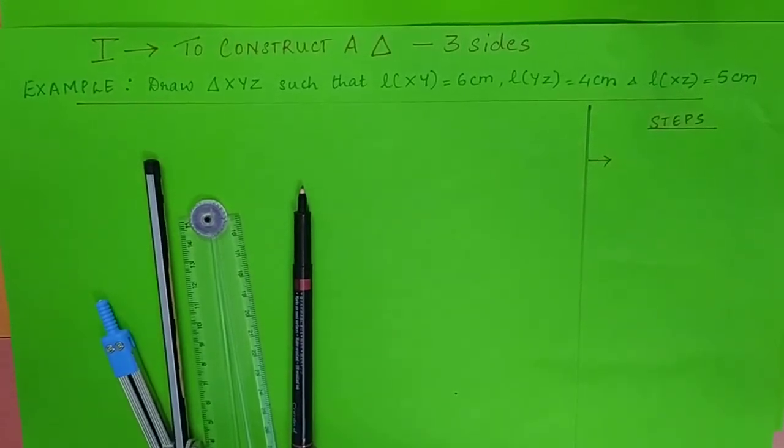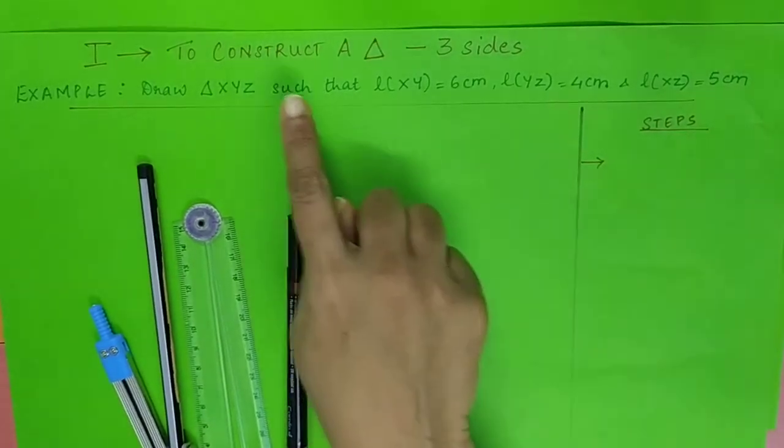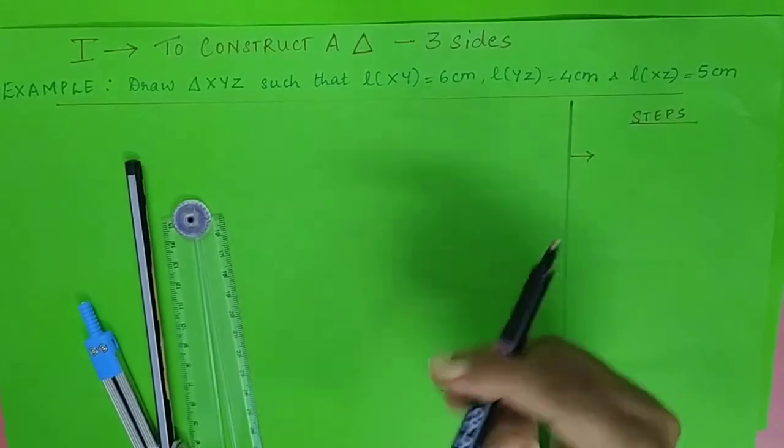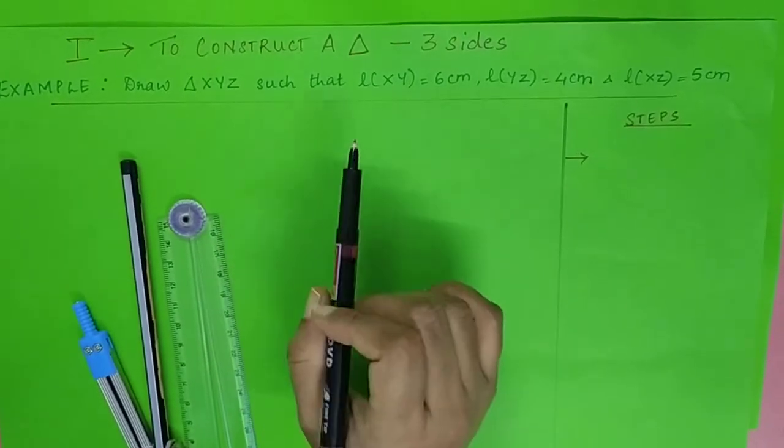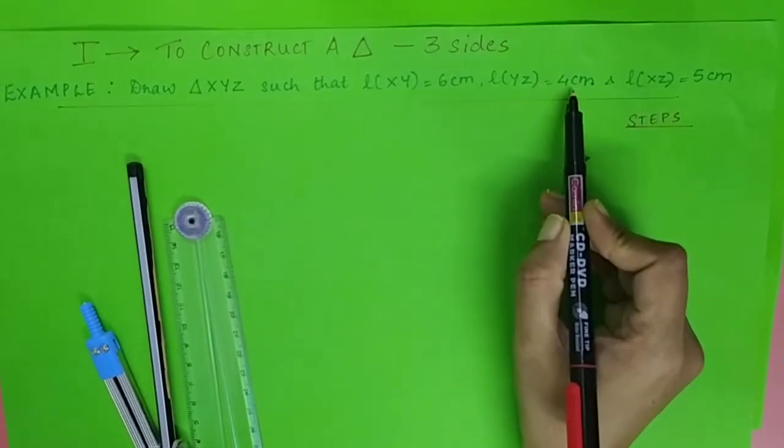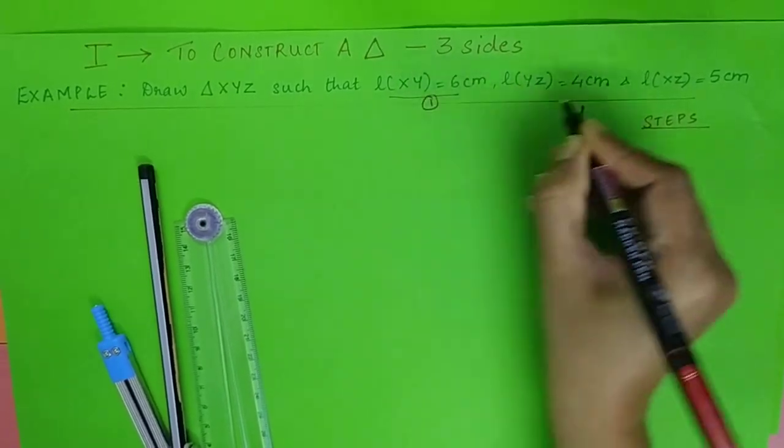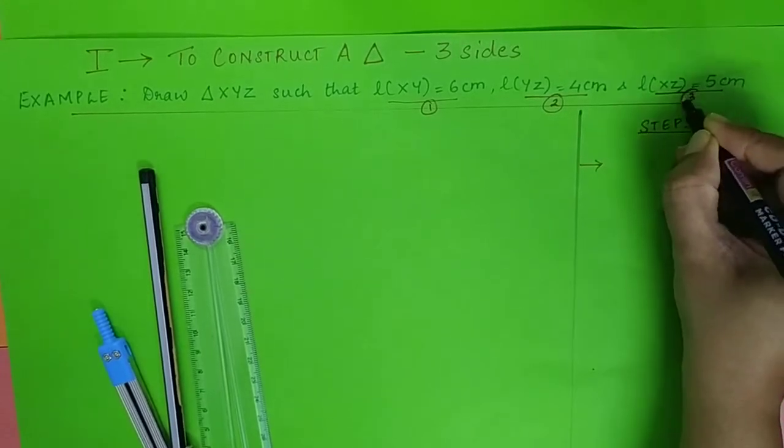Okay, today we are going to learn construction: how to construct a triangle when three of its side lengths are given to you. The first example is to draw triangle XYZ such that length XY is 6 centimeters, YZ is 4 centimeters, and XZ is 5 centimeters. If you notice, length 1, length 2, and length 3 are given - the length of all three sides.